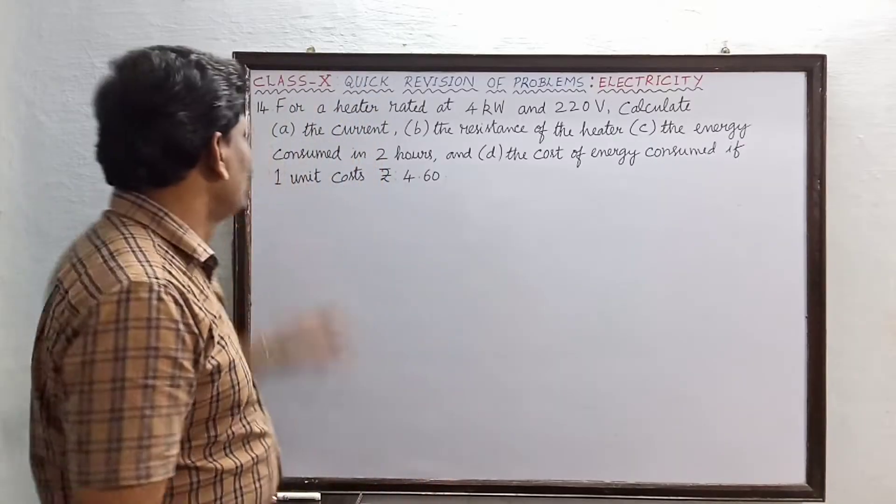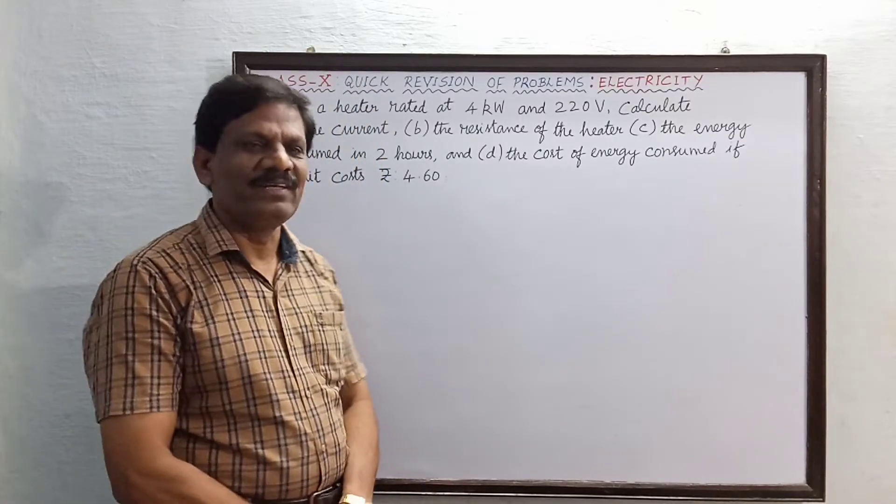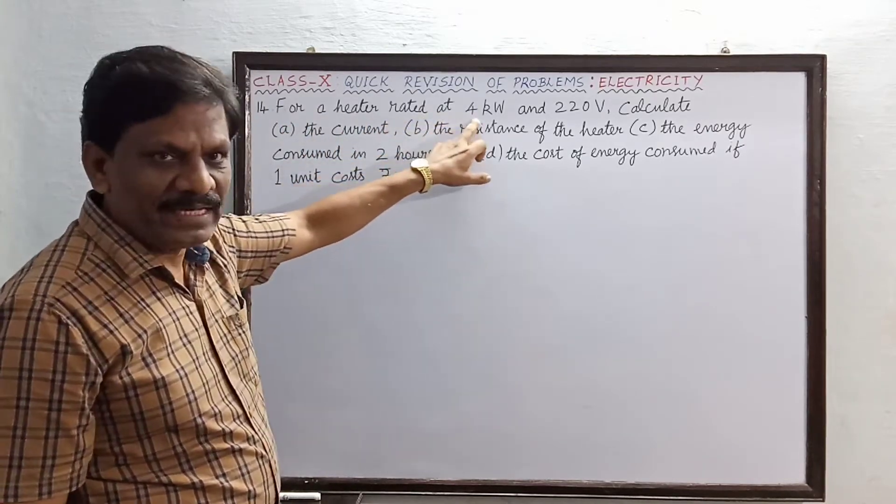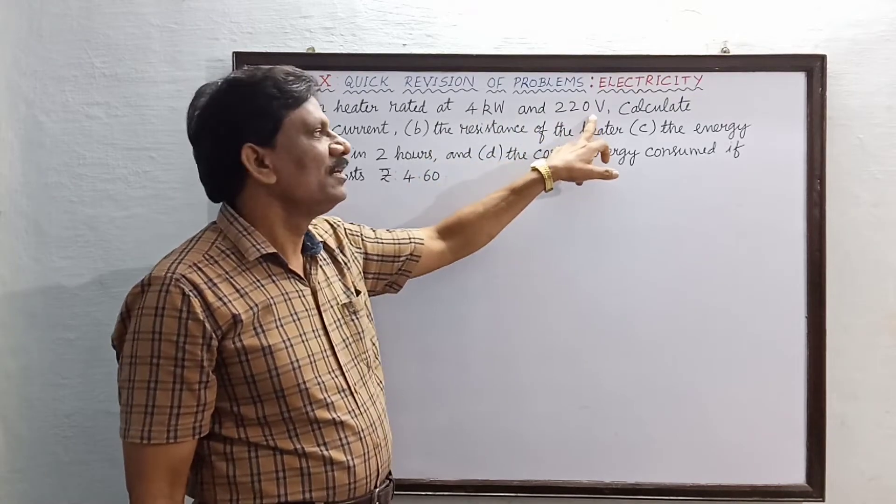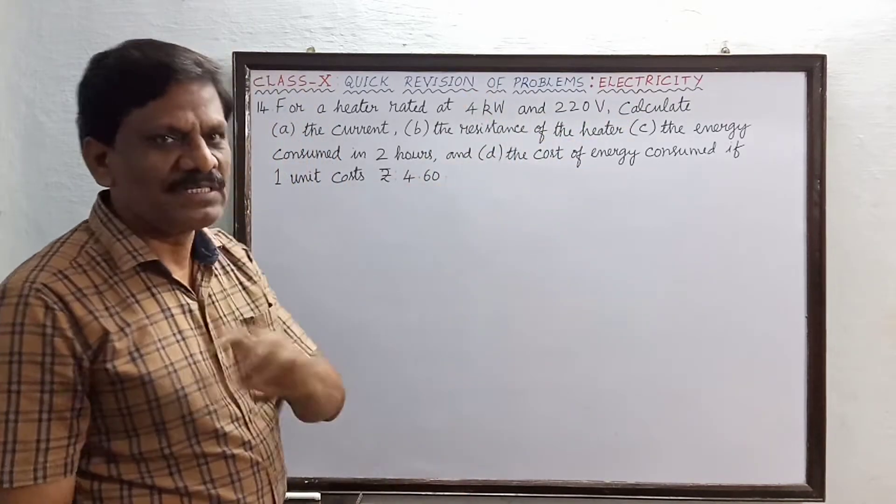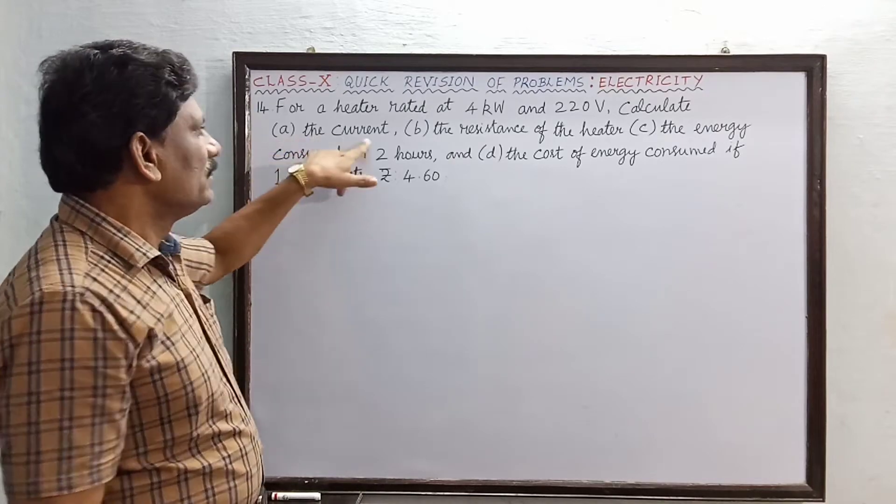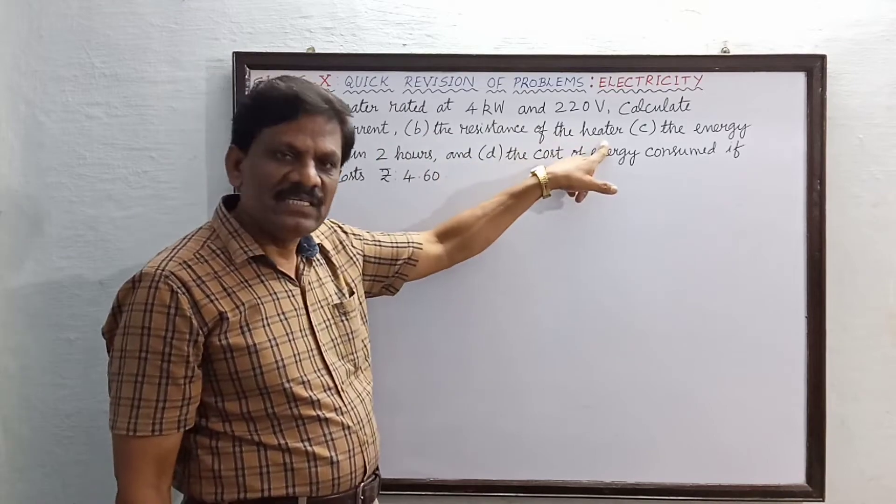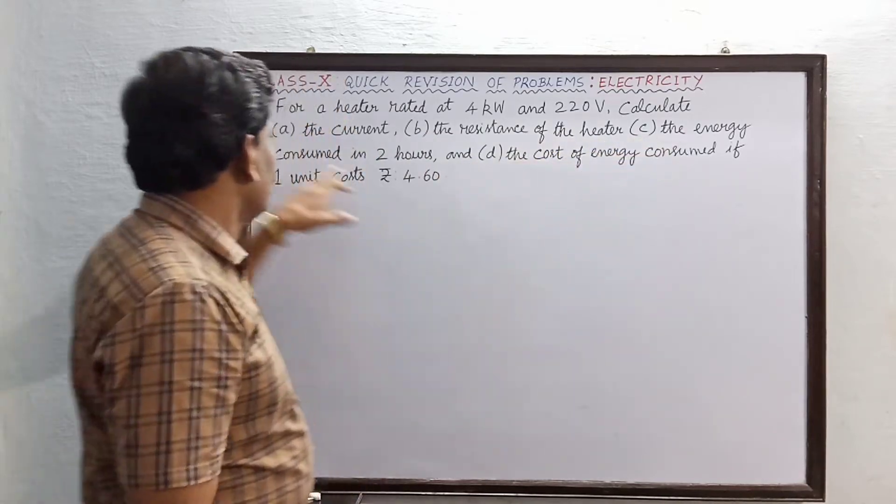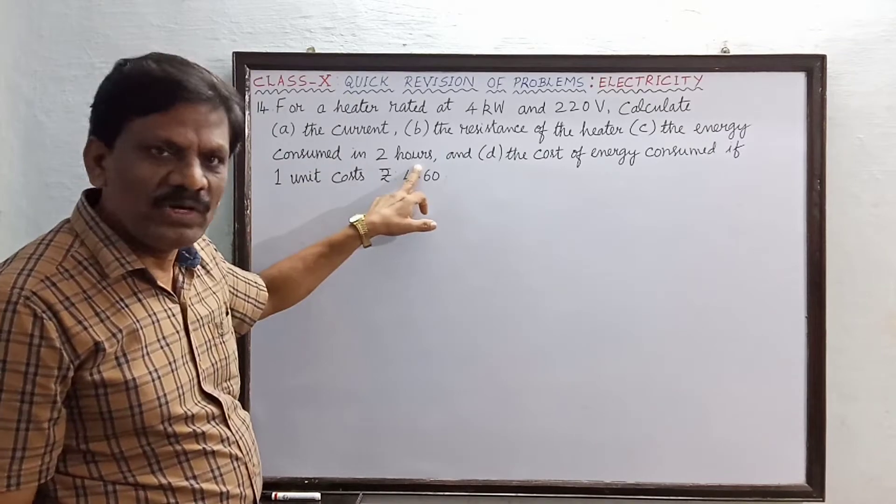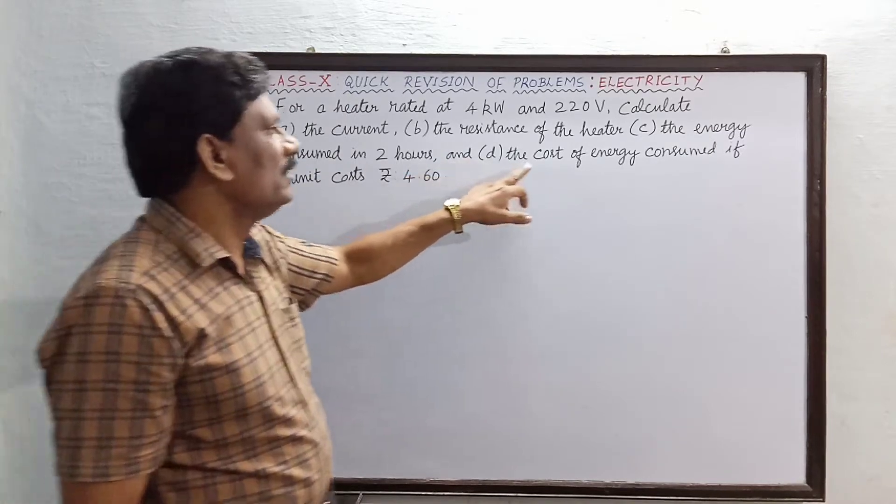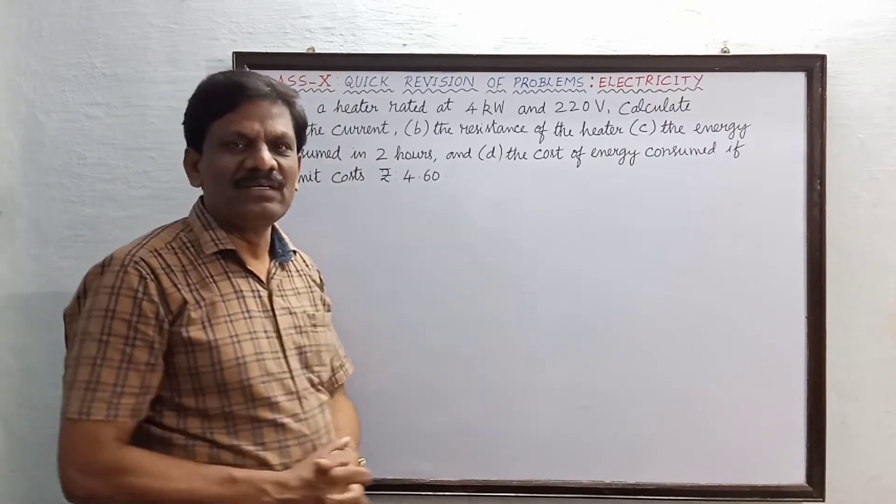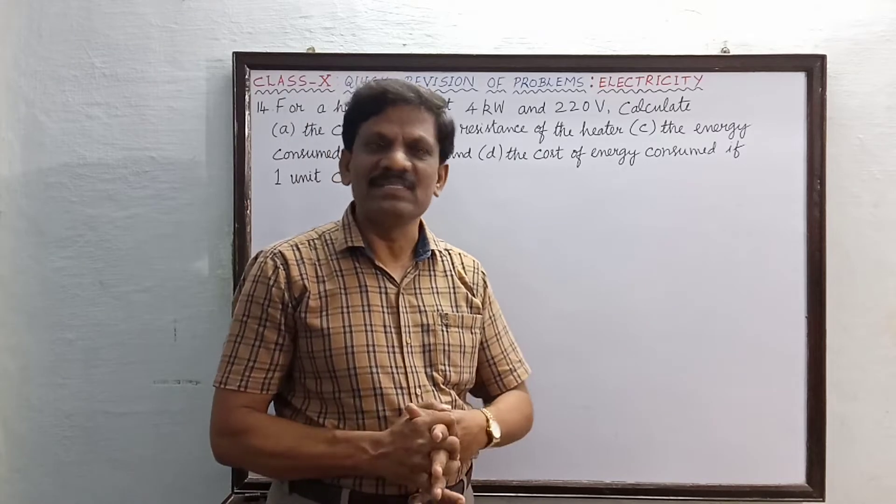Hi students, problem number 14. For a heater rated at 4 kilowatt and 220 volt, calculate four subdivisions are given. A, the current. B, the resistance of the heater. C, the energy consumed in two hours. And D, the cost of energy consumed if one unit costs rupees 4.60, 4 rupees 65.